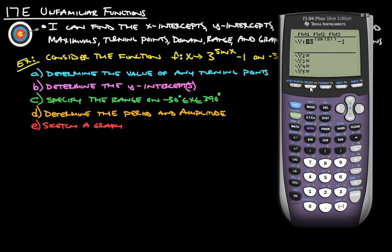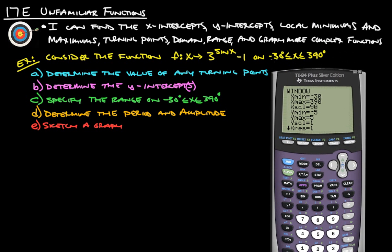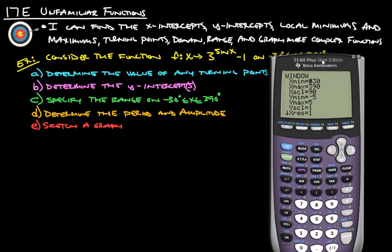And our window, it tells us right here we're going to go from negative 30 to positive 390. So there's negative 30, there's our 390 for our max, and our x scale, let's leave at 90 degrees.